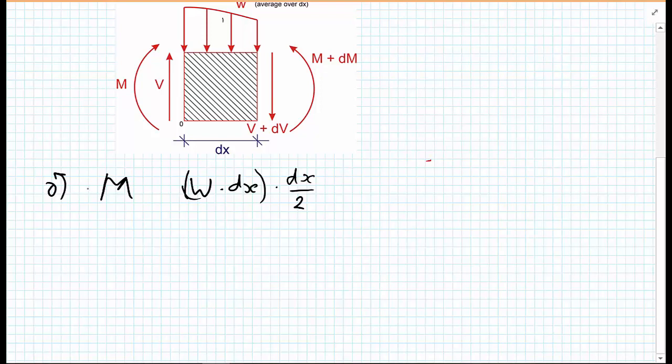Both of these are going clockwise, so we're choosing to call those negative in this case. Getting to the right-hand side of the portion, we have this V plus dV term. Keep this in brackets, V plus dV, and the lever arm to O is the width of the element dx.